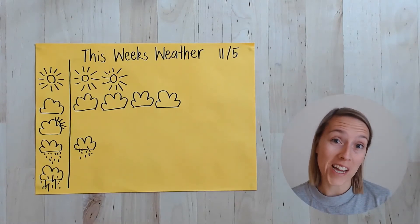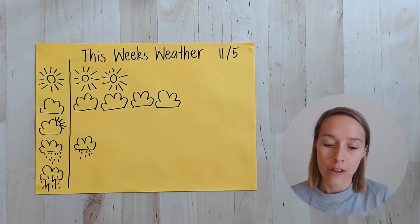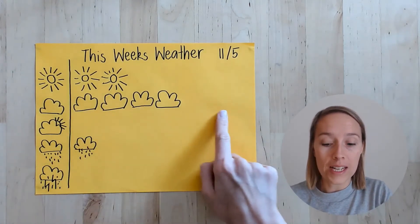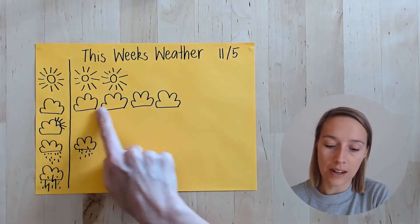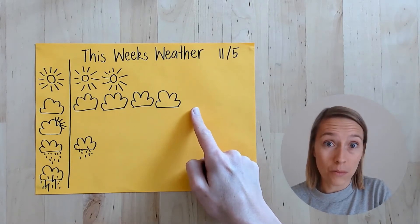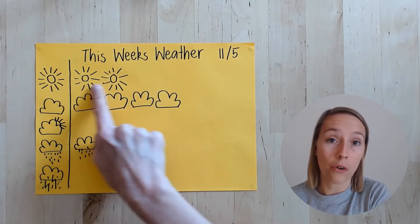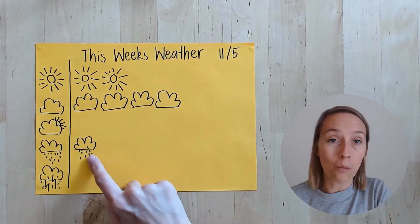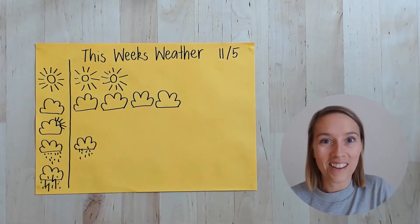Now that you've recorded all your data for the week, you'll be able to get lots of information from your graph. We can see that most days were cloudy this week because the clouds come furthest along the graph. The next most common days were sunny because that's the next longest row on our graph. And we had one rainy day, but no cloudy-and-sunny days and no stormy days. We can tell lots of information by putting all of our data into a graph.